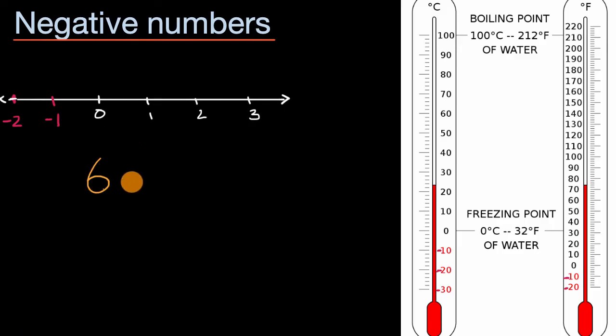For example, this right over here would be positive six, and then you could have negative six. But negative six is six below zero, or six left of the zero on the number line, while positive six is, of course, six above zero.